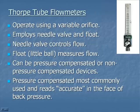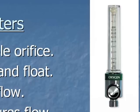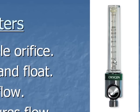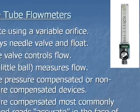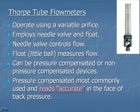The Thorpe tube flow meter is probably one of the most common devices we use. It's typically plugged into the wall at a 50 psi gas source, then reduced so we can regulate the flow. It employs a needle valve and a float — the needle valve controls the flow and the little ball floats up. These can be either pressure compensated or non-pressure compensated, meaning they'll read accurate or inaccurate in the face of back pressure. Most we use today are pressure compensated — they read accurately in the face of back pressure. If you obstruct the tubing, the ball goes to zero, indicating the patient is not getting any flow.